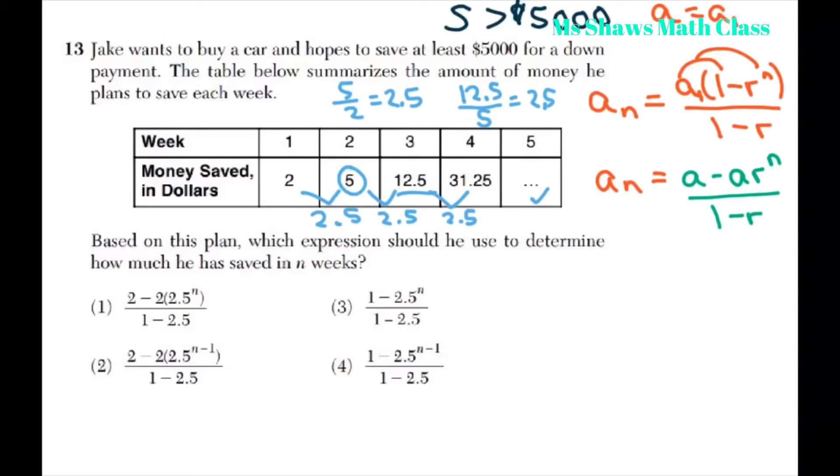So, your first term is 2. This is a sub 1. So, your first term is 2 minus, and we're using this formula here, 2 times your common ratio divided by 1 minus 2.5. So, this problem is just seeing if you know your formula for your geometric sequences.